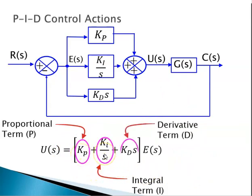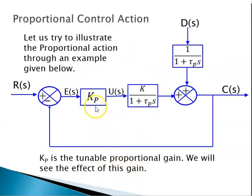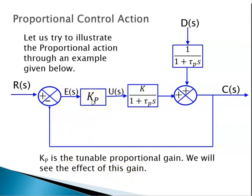K_i over s is called the integral term, and K_d times s is called the derivative term. The proportional controller has the form K_p — we call it proportional because the control input u(s) is directly proportional to the error. That is the reason why we call it a proportional controller. Here K_p is the tunable proportional gain.